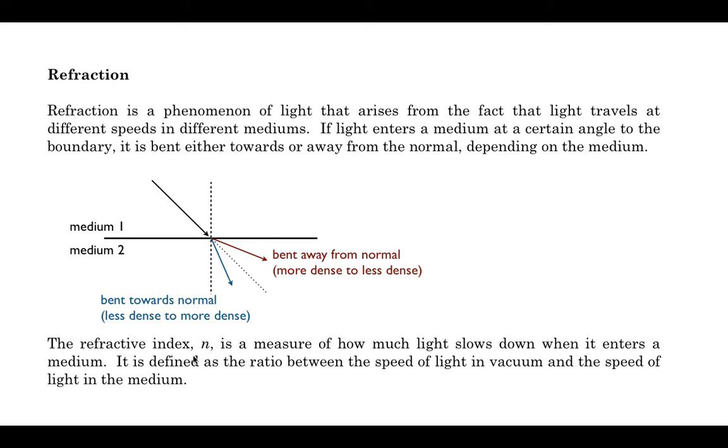How do we define density, optical density? We use something that is given the symbol n, and that's called the refractive index. And it's a measure of how much light slows down when it enters a medium. It's defined as the ratio of the speed of light in the vacuum and the speed of light in the medium.